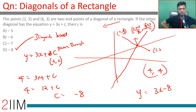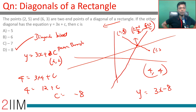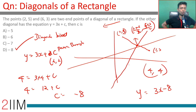We are effectively using the idea that the diagonals of a rectangle bisect each other. That means this diagonal y equals 3x plus c passes through the midpoint of the diagonal with endpoints (2, 5) and (6, 3), and once you know that, you're through.